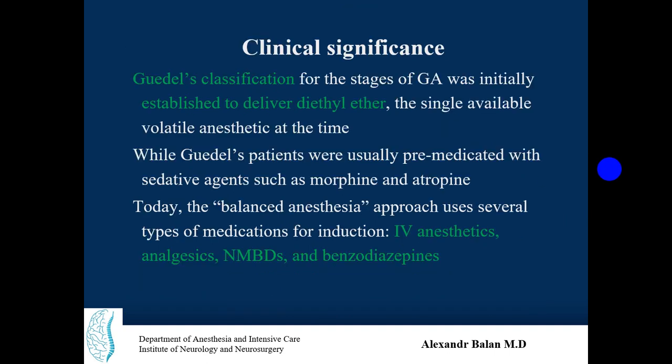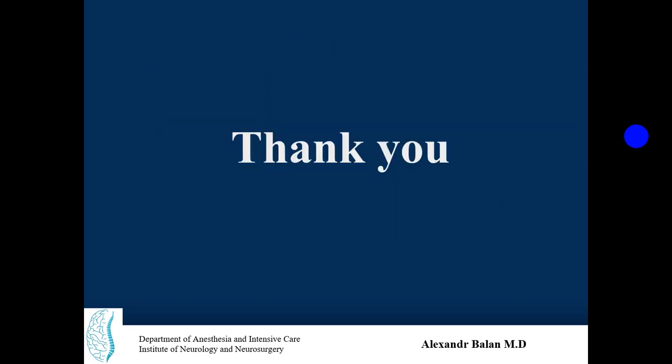Guedel's classification was initially established to deliver ether — a scarce and the only available volatile anesthetic at the time. Patients were usually premedicated with sedative agents such as morphine and atropine to decrease secretions. Today's balanced anesthesia approach uses several types of medication: IV or inhalatory anesthetics for induction, analgesics, neuromuscular blocking drugs, and benzodiazepines. Thank you very much — if you like these videos, please subscribe and follow on YouTube or social media.